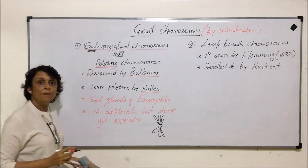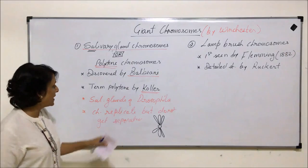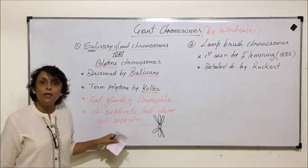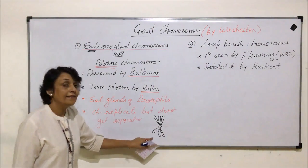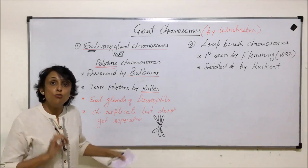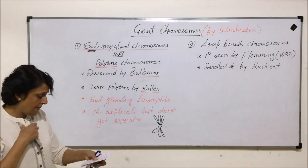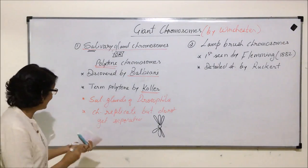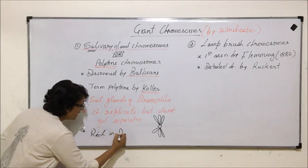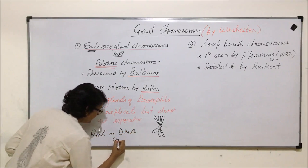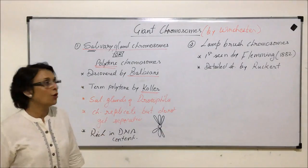So salivary gland refers to the gland where it was obtained from — the Drosophila salivary gland — and polytene refers to the structure resulting from replication without separation of the chromatids. These chromosomes are rich in DNA content. This is one type of giant chromosome.